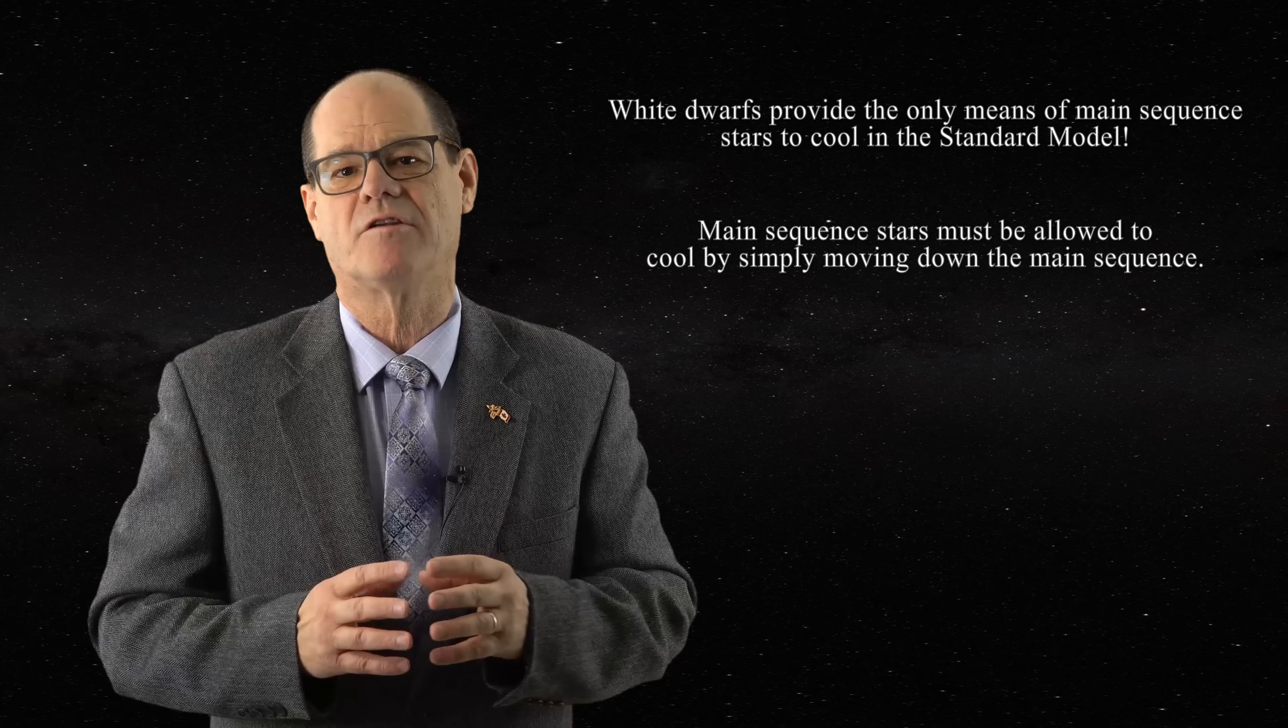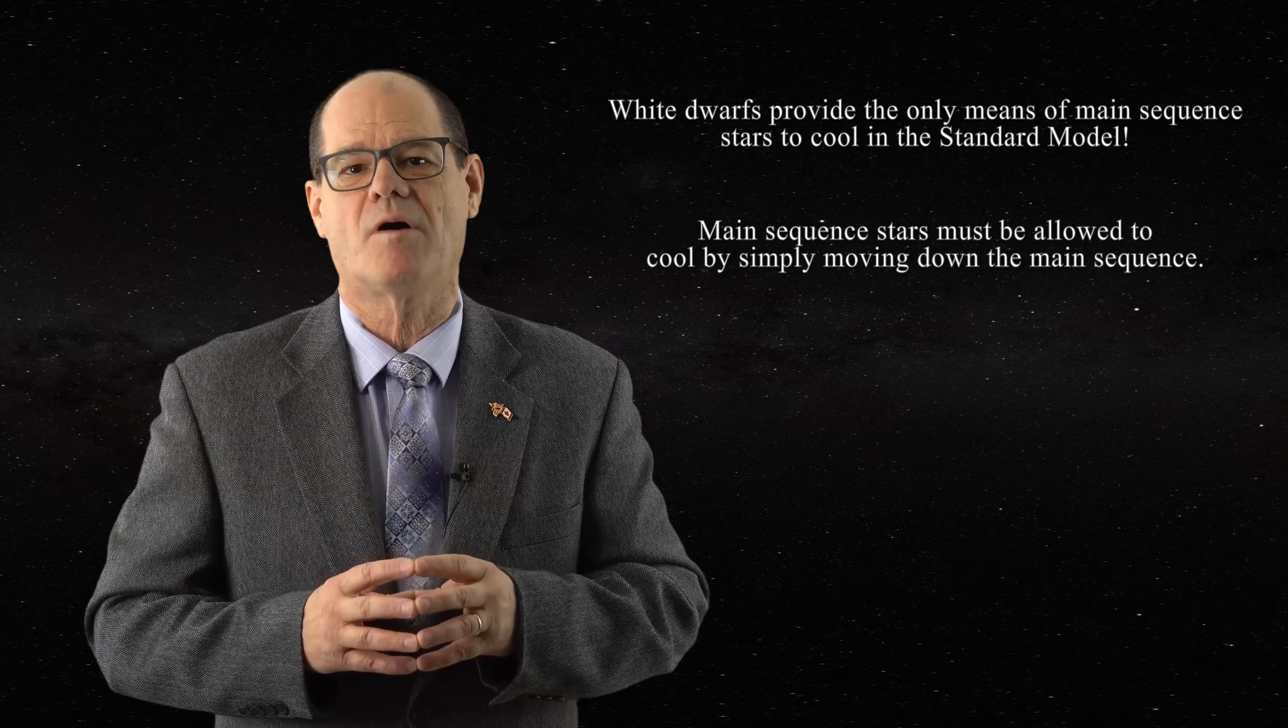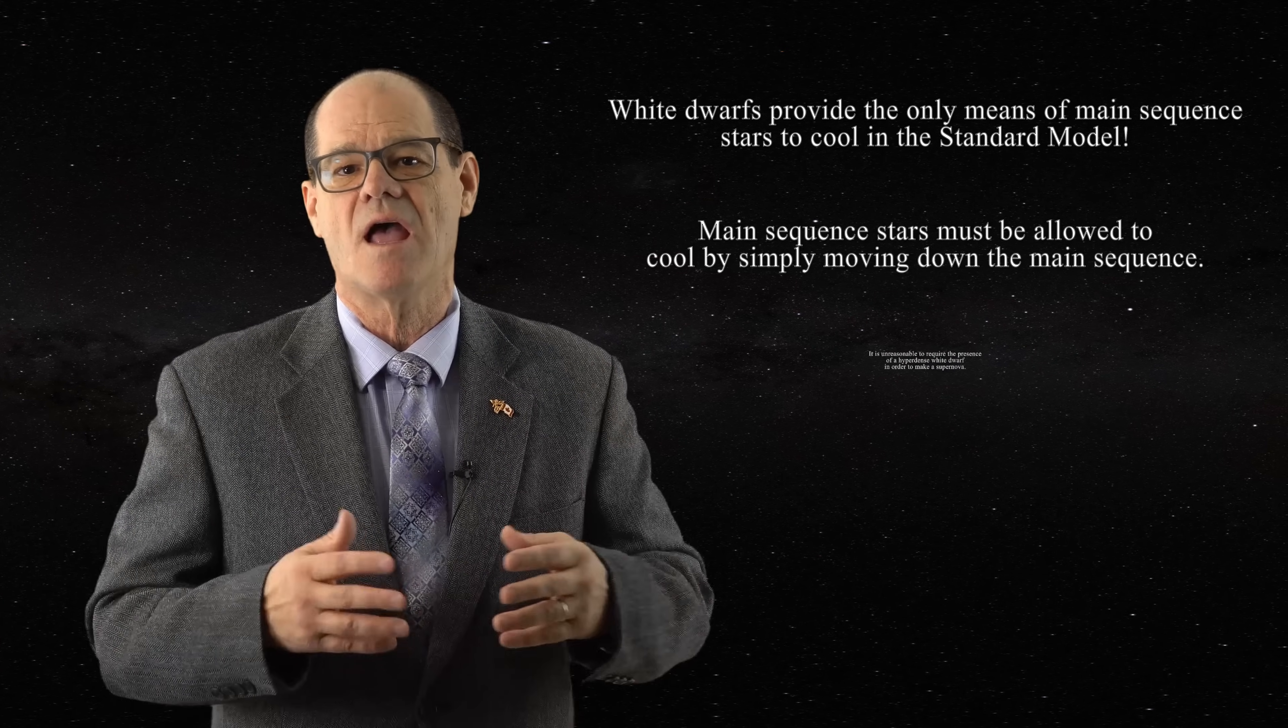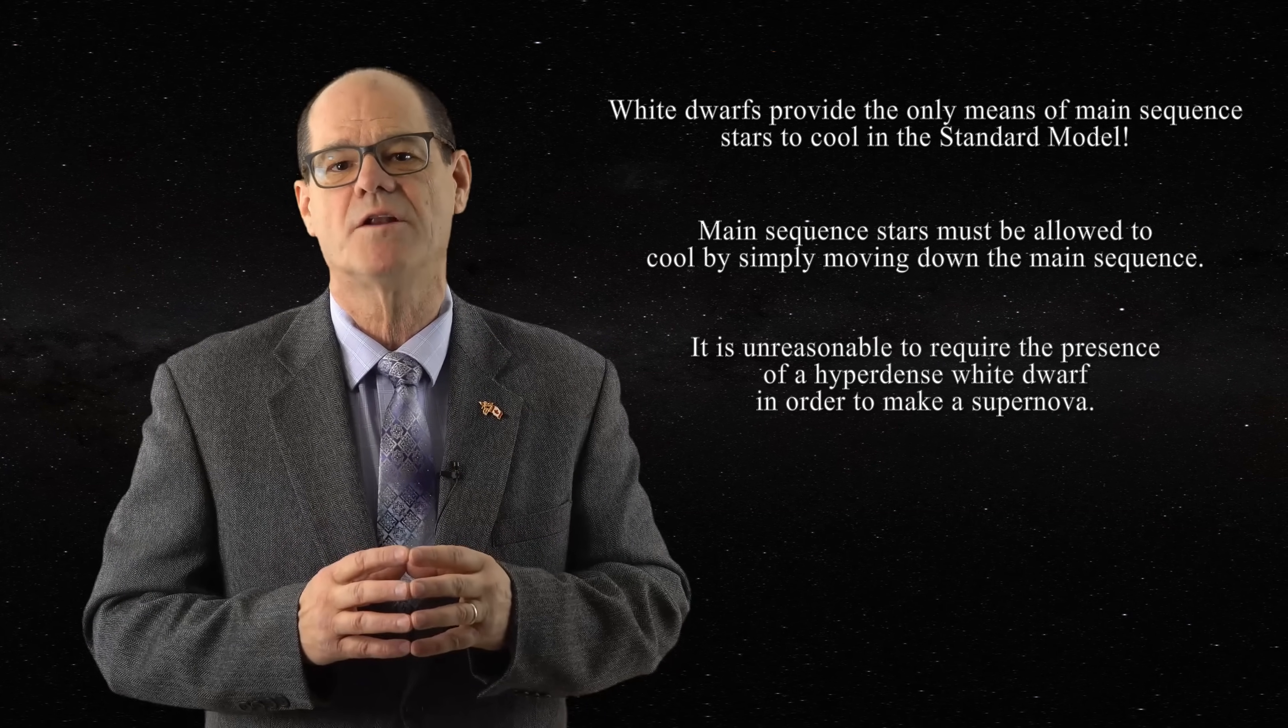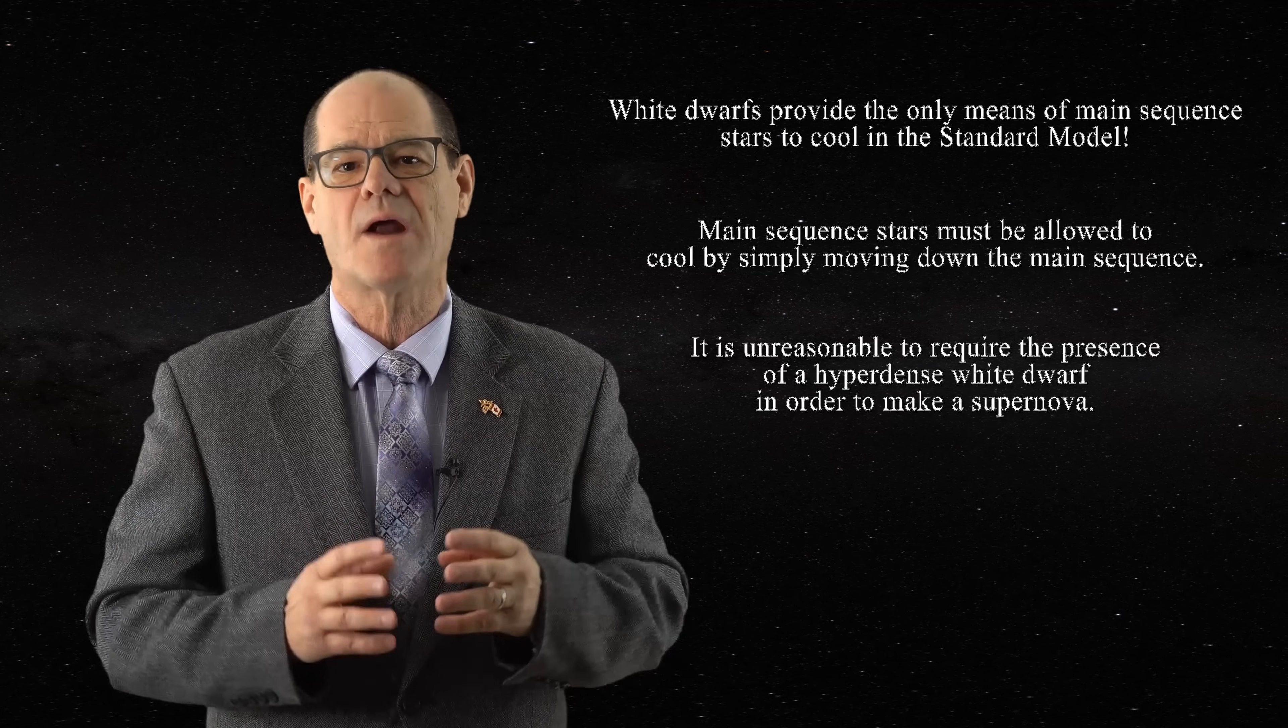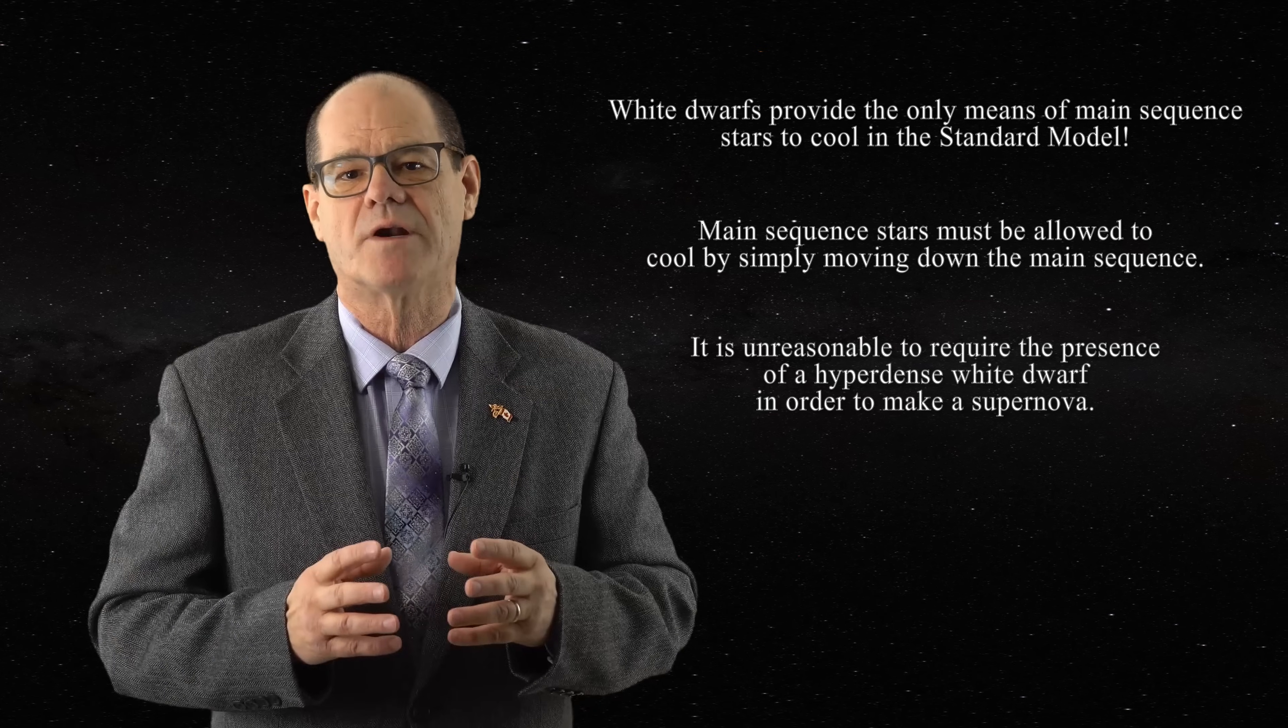Nothing more complicated is required, except when the proponents of the standard model try to tell us that stars have negative heat capacities. Eighth, it is unreasonable to require the presence of hyperdense white dwarfs in order to make a supernova. All that is required is the rapid expansion of an unstable intercalate region in an ordinary star.